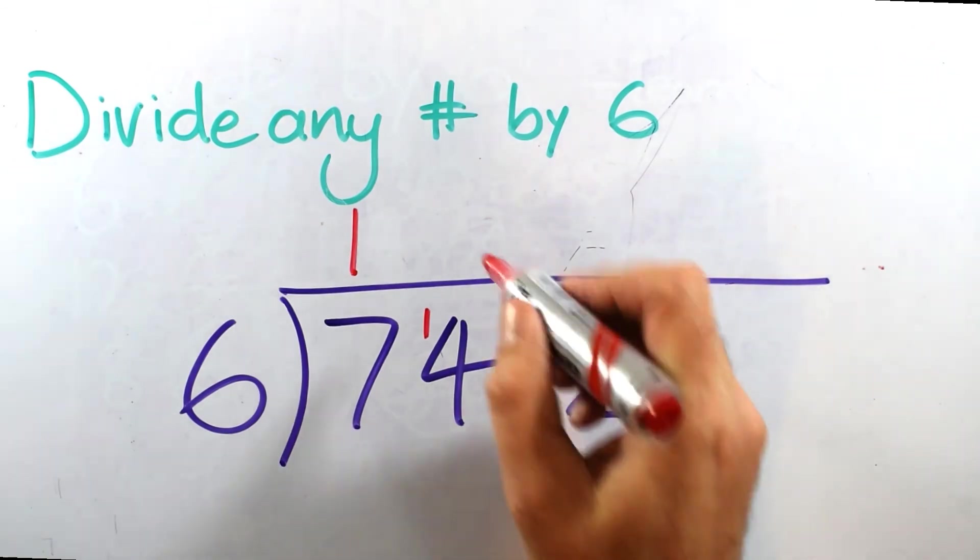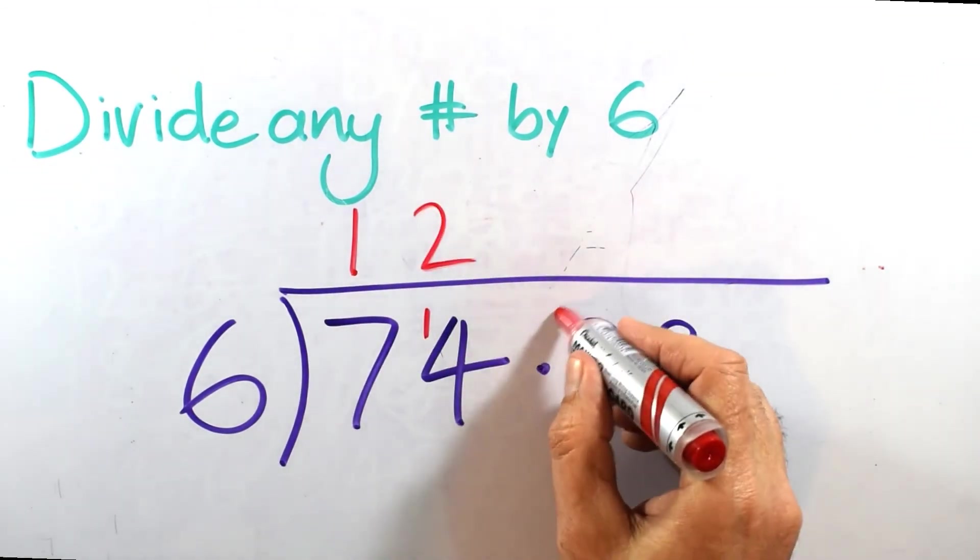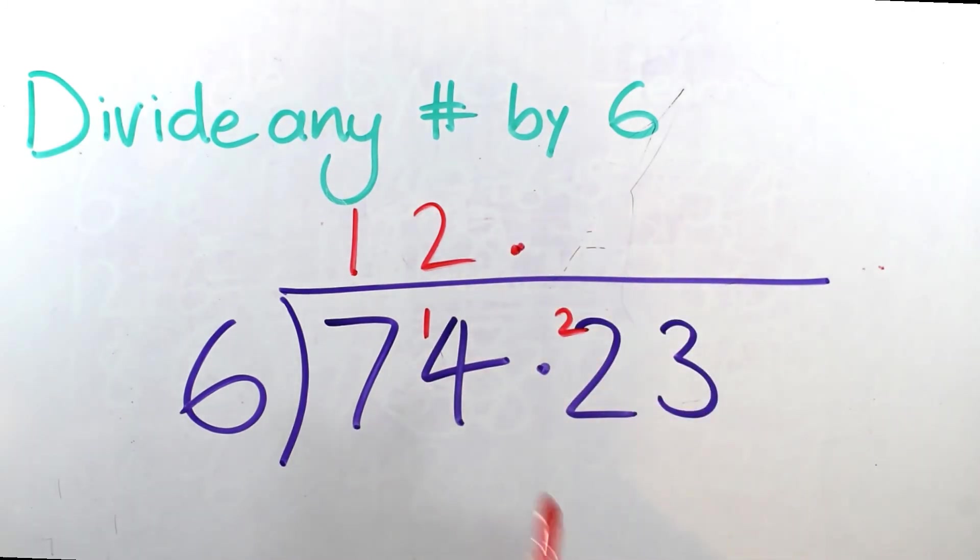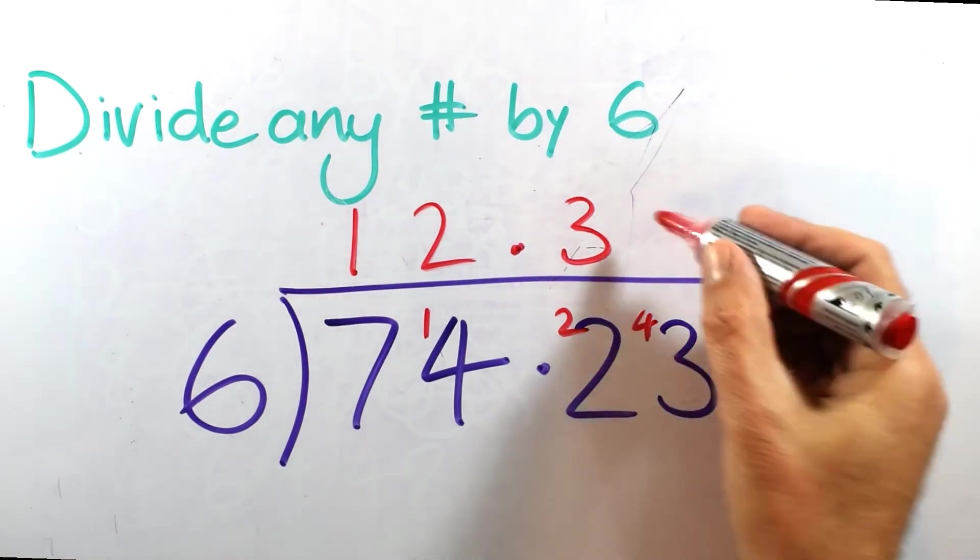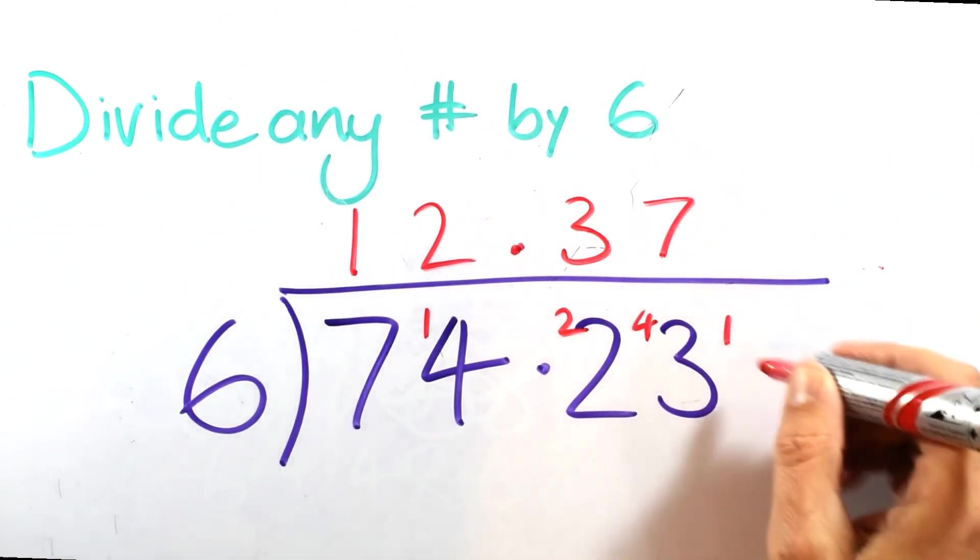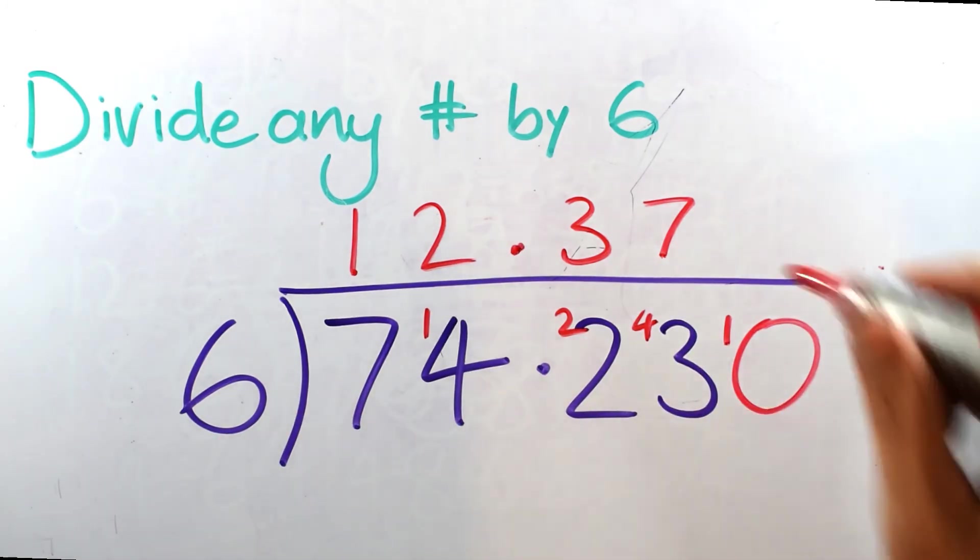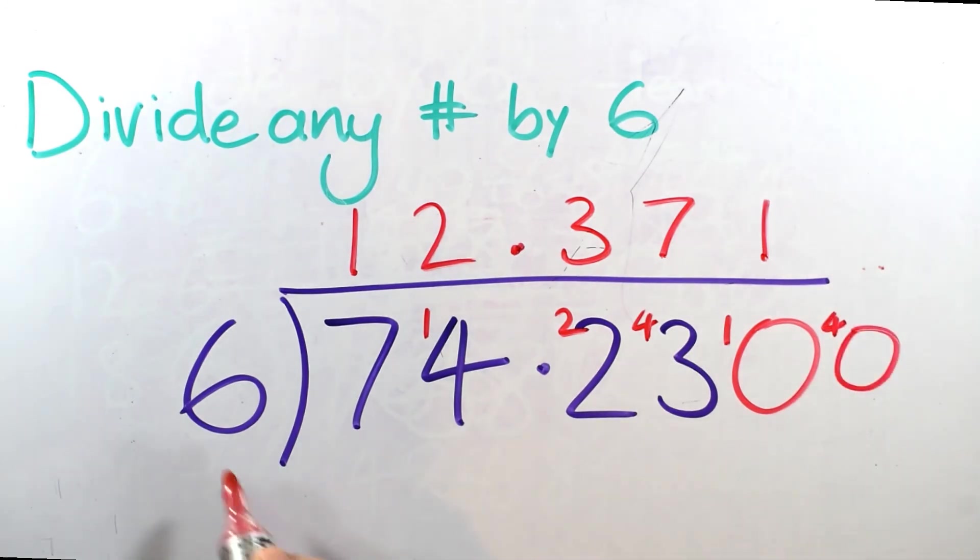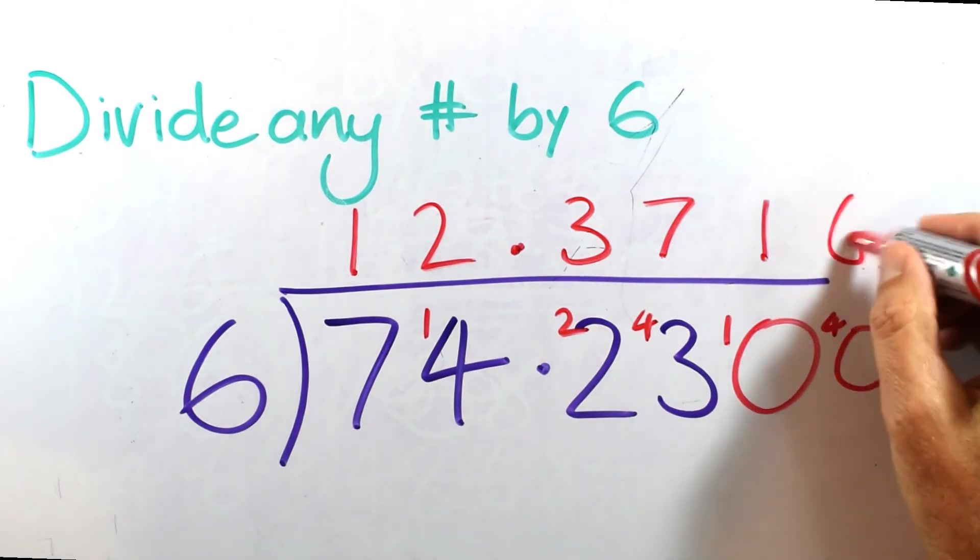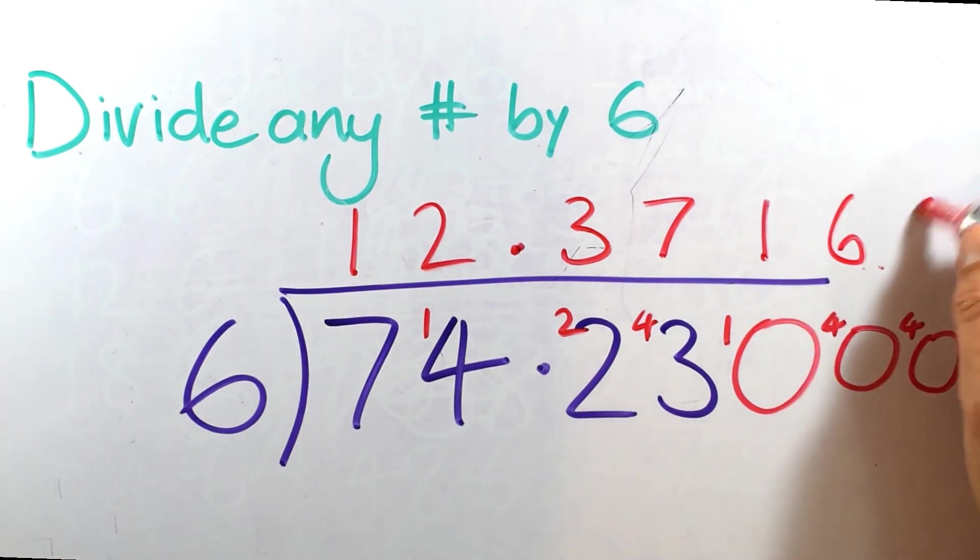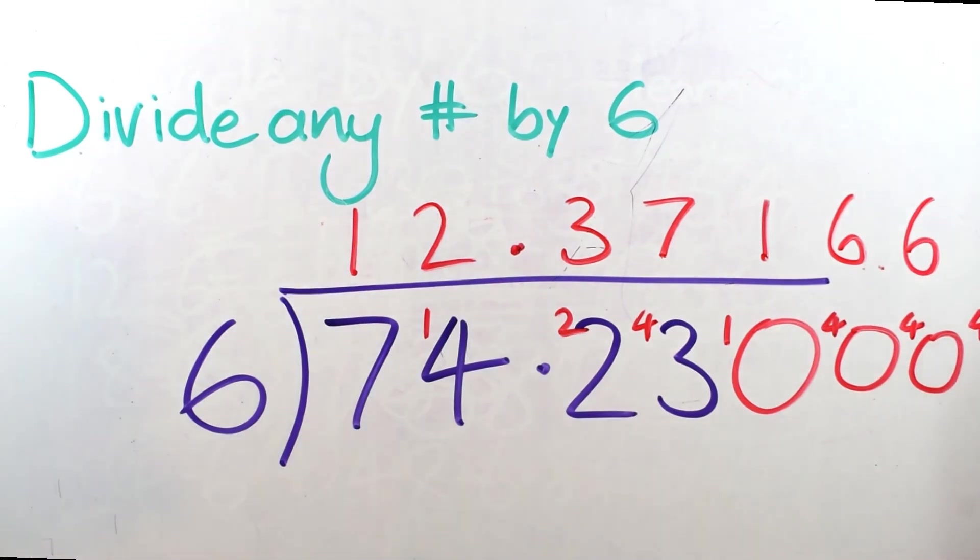6 into 7 goes once, 1 left over. 6 into 14 the closest is 6 times 2 is 12 with 2 left over. Make sure my decimal goes there. It's really important that I don't forget that. 6 into 22, not quite 24. I have to go down to 18 which is 3 times. Then I've got 4 left over. 6 into 43, oh so close. 42 would have been 7 times. So I can put 7 but I've got 1 left over, I have to put a 0. 6 into 10 goes once with 4 left over. 6 into 40, 36 goes 6 times with 4 left over. And you can see here this is going to be one of those repeating patterns again. Hence the ellipsis.